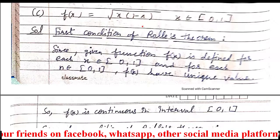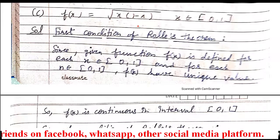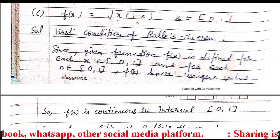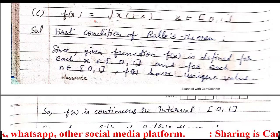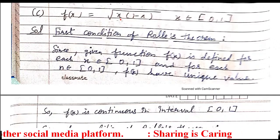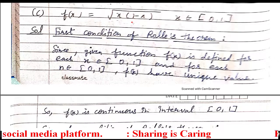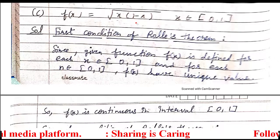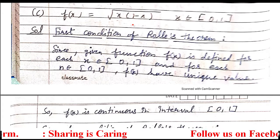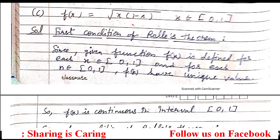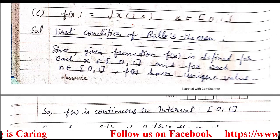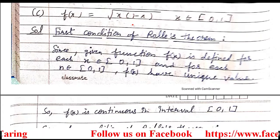We have to satisfy Rolle's theorem here. Now since f(x) is not any standard function — it is not a polynomial function either — that is why we have to prove all 3 conditions one by one. We cannot directly write them. So there are 3 conditions.